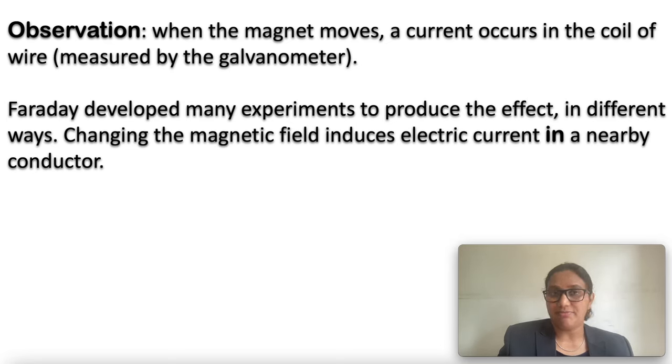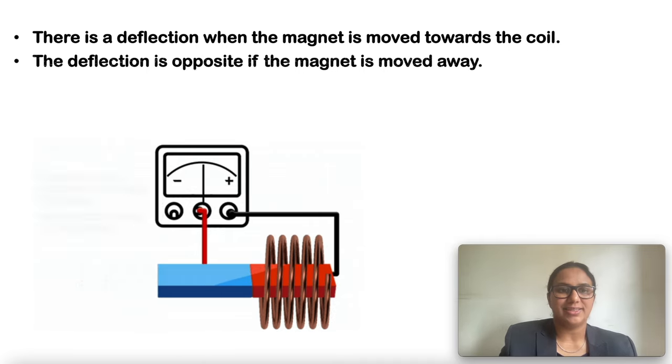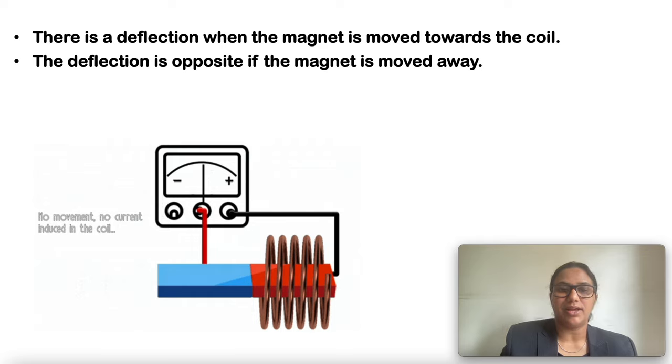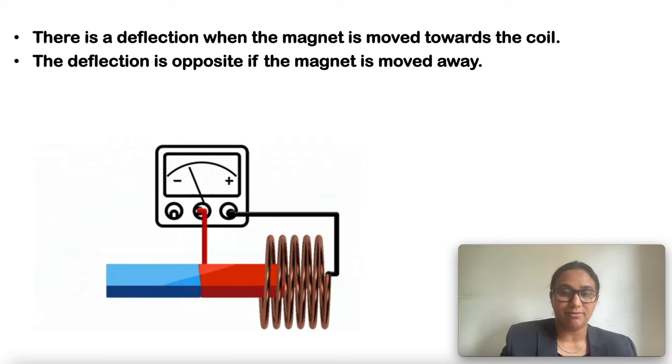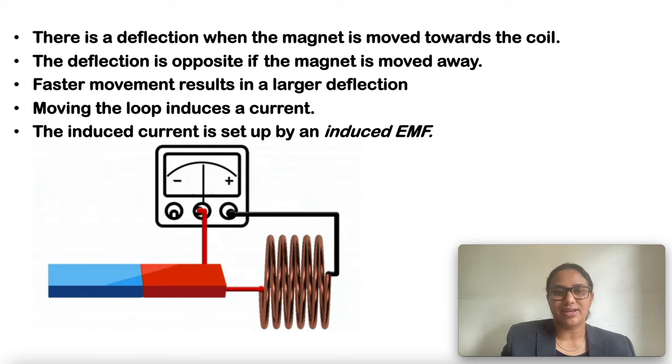Faraday developed many different ways to produce this effect. There is a deflection when the magnet is moved towards the coil. There is a deflection opposite if the magnet is moved away. Faster movements result in a larger deflection. Moving the loop induces a current. The induced current is set up by an induced EMF.